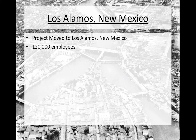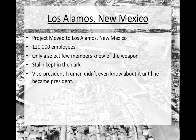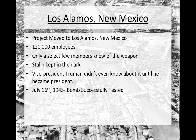The project employed over 120,000 employees, but only a select few members actually knew that a weapon was being created. Joseph Stalin, a wartime ally of the United States, didn't know about the project. In fact, Vice President Truman didn't even know that an atomic bomb was being created until he assumed the presidency in 1945.